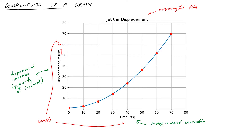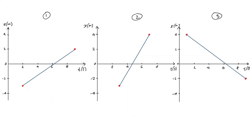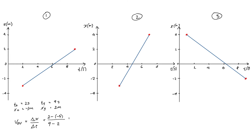Let's recap how to find average velocities for those three motions. For the first graph: t₀ = 2, tf = 9, x₀ = −3 m, xf = 2 m. Average velocity = Δx/Δt = (2 − (−3)) / (9 − 2) = 5/7 ≈ 0.71 m/s. For the second graph, we'd expect a larger positive value since it's steeper. Calculating: (4 − (−3)) / (7 − 3) = 7/4 ≈ 1.75 m/s.